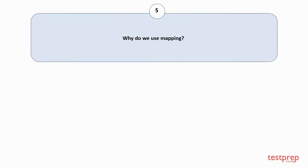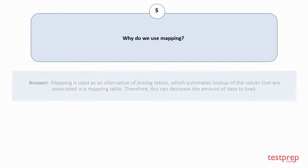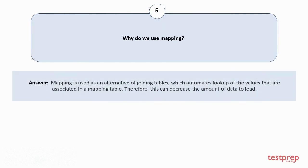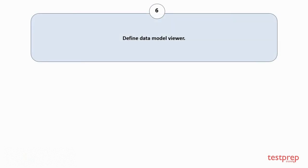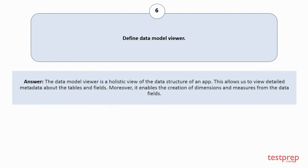Question number 5: Why do we use mapping? Mapping is used as an alternative to joining tables, which automates lookup of the values that are associated in a mapping table. Therefore, this can decrease the amount of data to load. Question number 6: Define data model viewer. The data model viewer is a holistic view of the data structure of an app. This allows us to view detailed metadata about the tables and fields. Moreover, it enables the creation of dimensions and measures from the data fields.